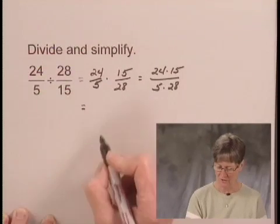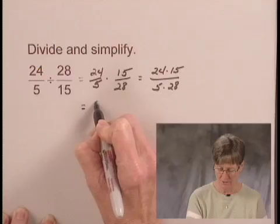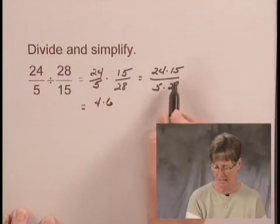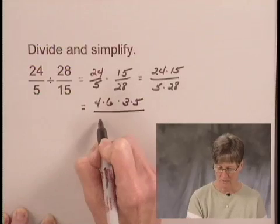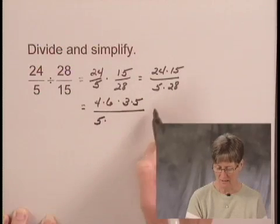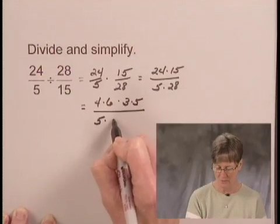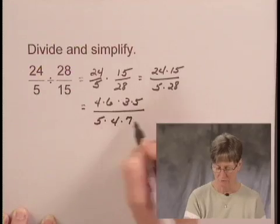So I'm going to factor. In the numerator, I'm going to write 24 as 4 times 6 and I'm going to write 15 as 3 times 5. And in the denominator I have 5 times, and I'm going to rewrite 28 as 4 times 7.